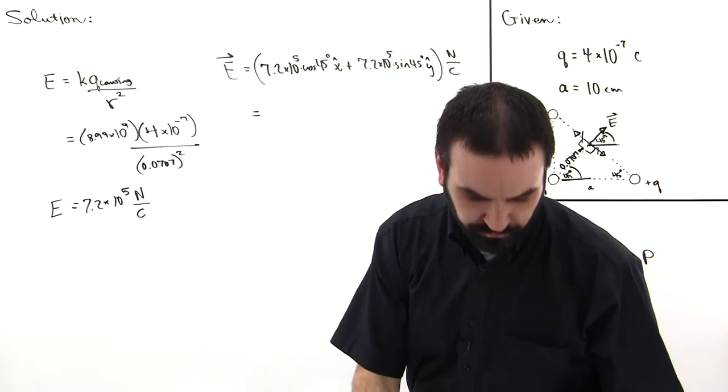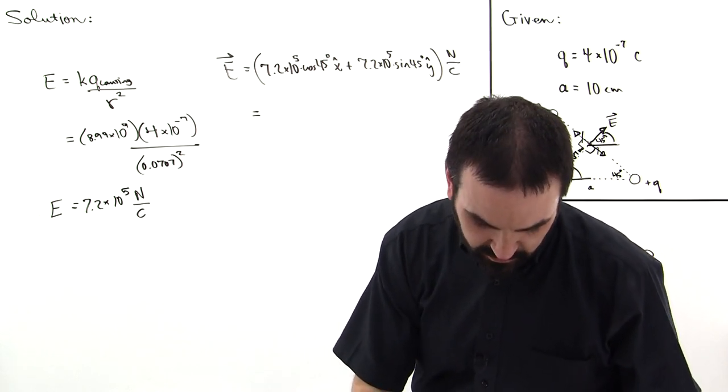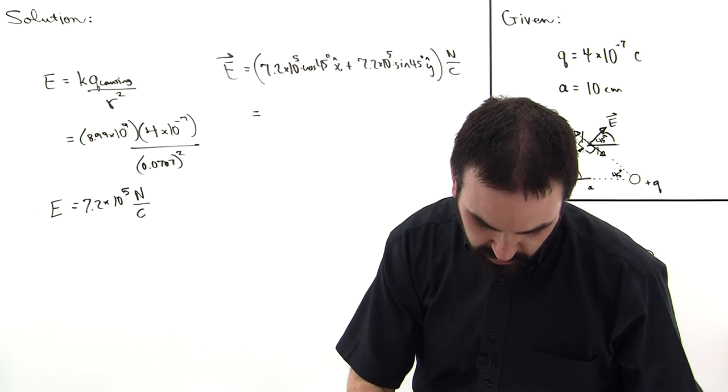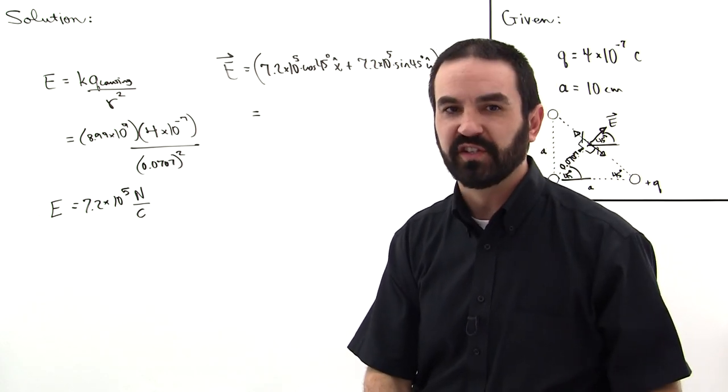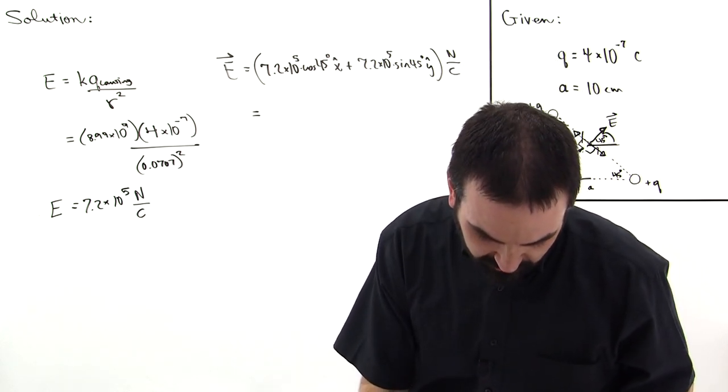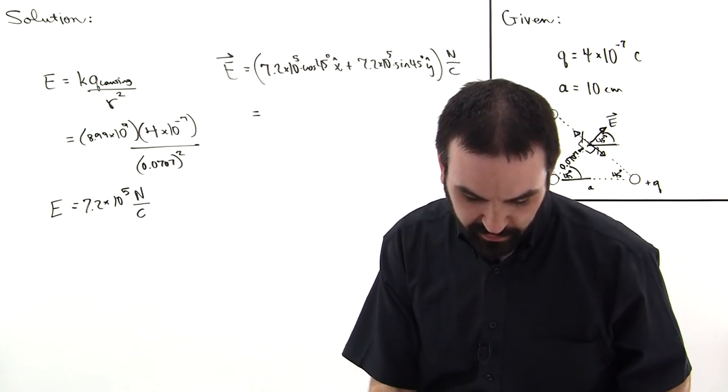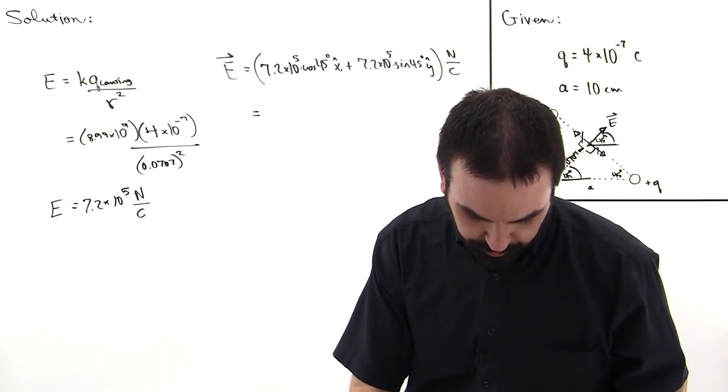And if we simplify that, we will obtain, multiplying 7.2 times 10 to the fifth times the cosine of 45, and the cosine of 45 is equal to the sine of 45, which is square root of 2 over 2. And so that number comes out to be 508,551 newtons per coulomb. I'm going to put that in scientific notation.